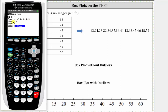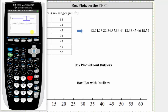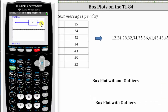We have our data in L1, which is correct for the X list. Before we graph the box plot, we have to make sure the window will show all of the data. We can do this automatically by pressing ZOOM and then option nine for ZOOM STAT. Notice how we now see the box plot. We can determine the five-number summary used to create the box plot by pressing the TRACE key and then arrowing left or right to determine the minimum, quartile one, the median, quartile three, and the maximum.